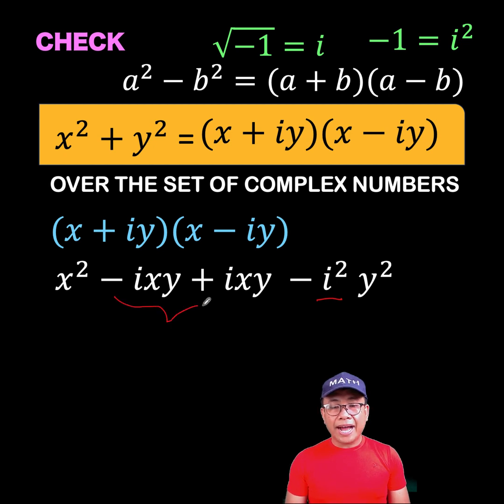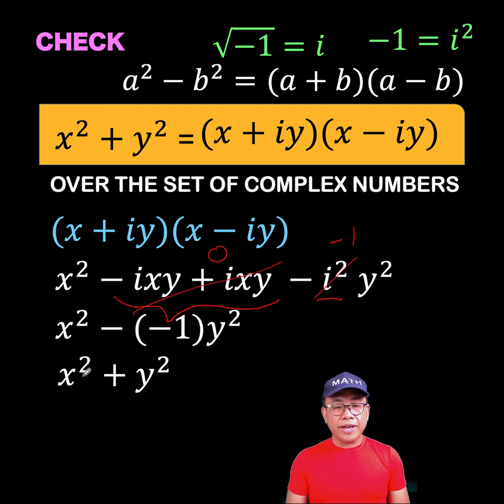But we know that i squared is equal to negative 1. So we can replace this with negative 1. And also, minus i x y plus i x y will result to 0. So this part here is negative 1. And therefore, negative times negative will give us positive. So we have x squared plus y squared equals this product of these two binomials, which are the factored form of x squared plus y squared.